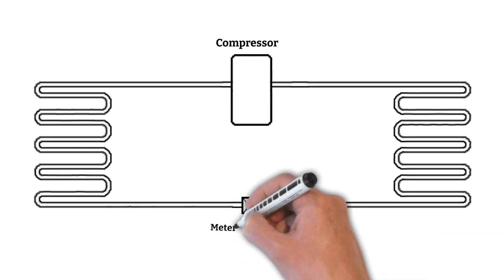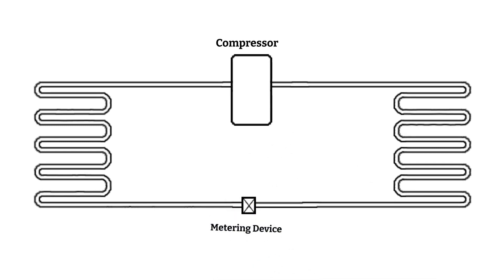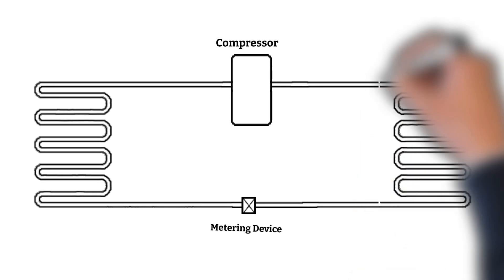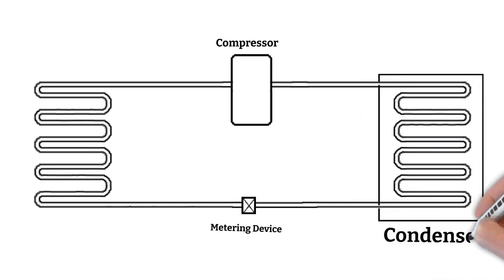This is the metering or throttling device that controls the amount of liquid refrigerant going to the evaporator. This is the condenser where gas refrigerant loses its heat and changes to liquid state.